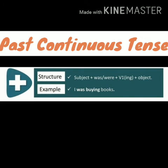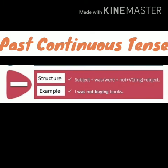To form an affirmative sentence in past continuous tense: Subject + helping verb (was/were) + verb -ing form + object, then full stop. Example: 'I was buying books.'